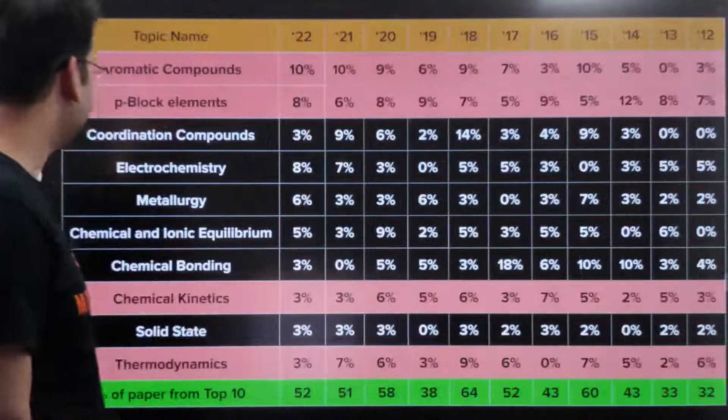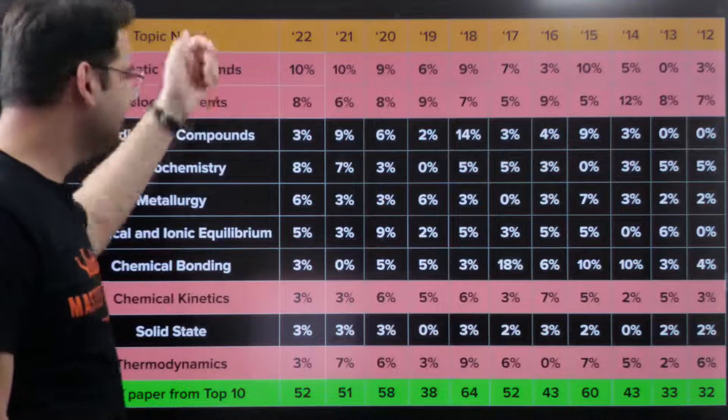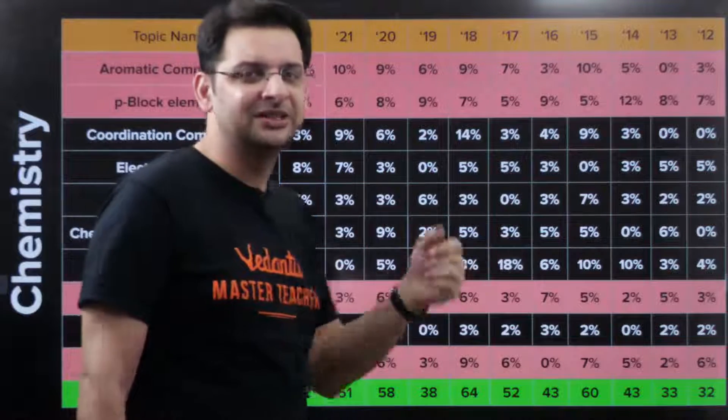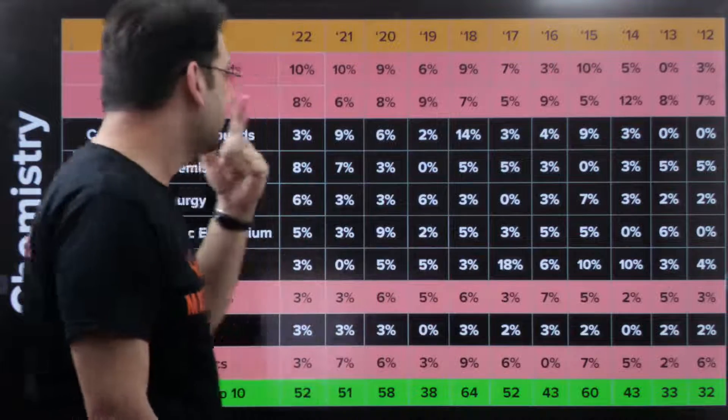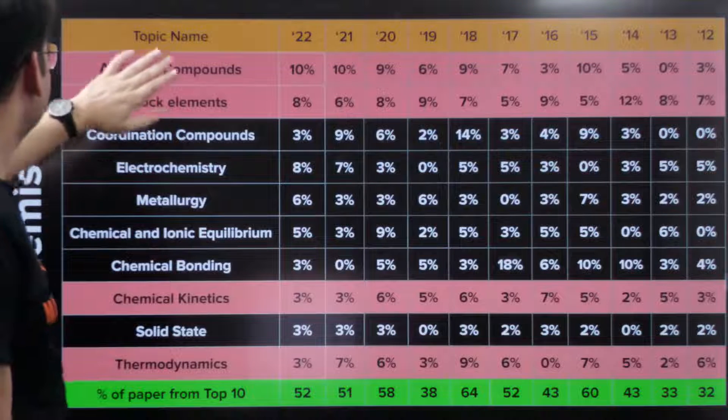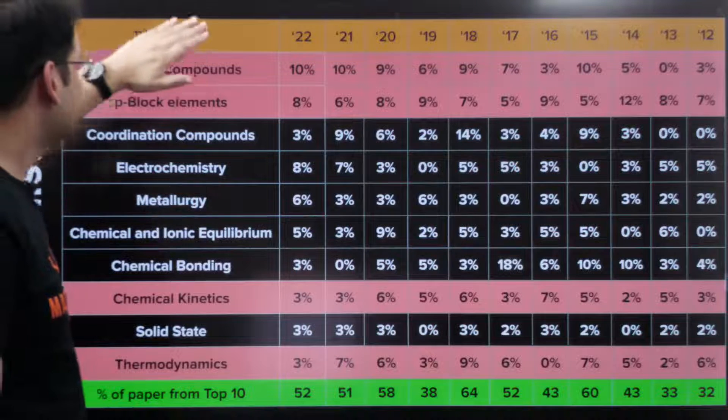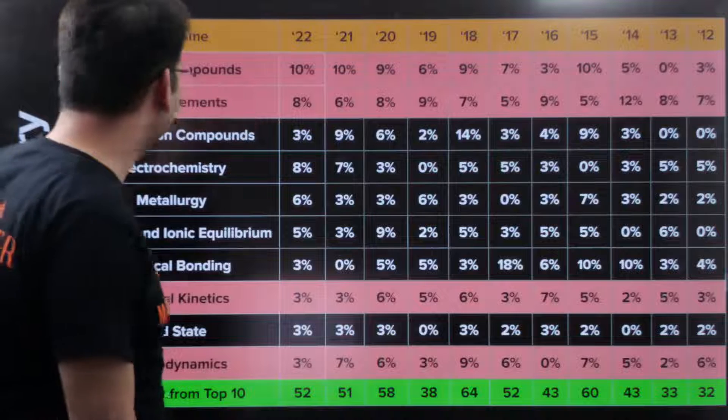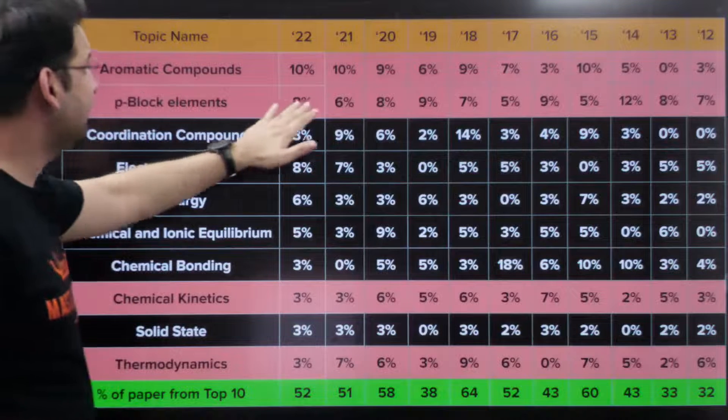If we talk about chemistry, chemistry is normally evenly spread because there are three units: physical, organic and inorganic chemistry. So these are the topics that you can always note. This is aromatic compounds, generally 9 to 10%. P block elements, 8, 7, 8, 5, 6%. Coordination compounds.